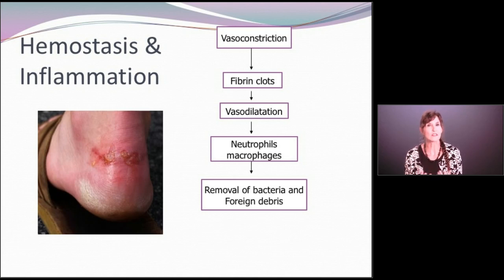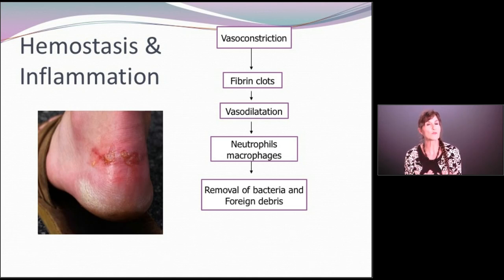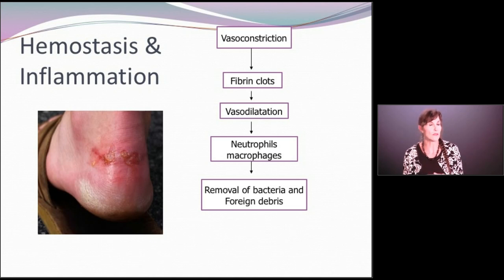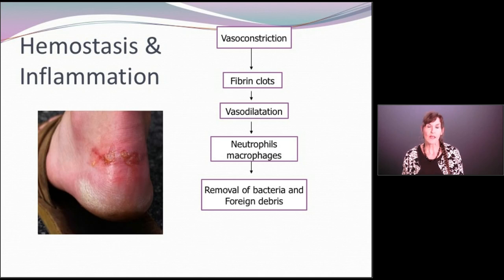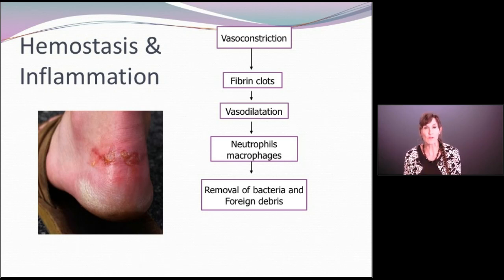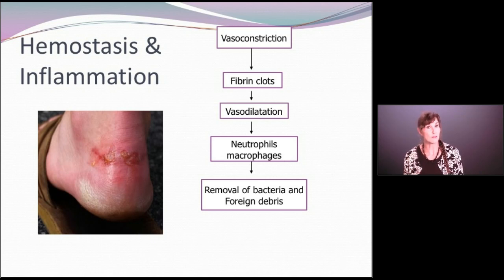Hemostasis is actually considered to be the point at which healing begins, because within the platelets in that fibrin clot there are growth factors — referred to as platelet-derived growth factor alpha-alpha and beta-beta. As that clot matures, the platelets will degranulate and pour out growth factors into that wound bed to help facilitate healing. That is the very first component of this first phase of wound healing.